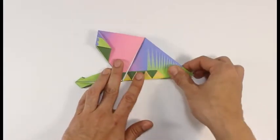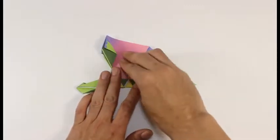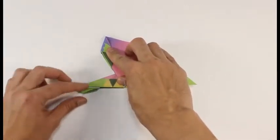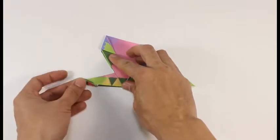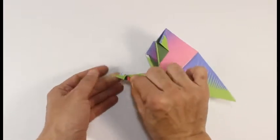Valley fold in half so that the entire wings match up. Straighten up the head.